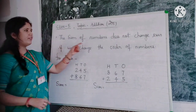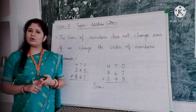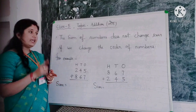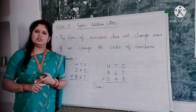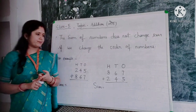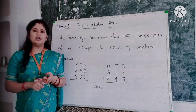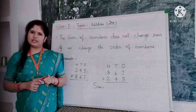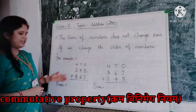The sum of numbers does not change even if we change the order of the numbers. If we change the order of the numbers, the sum will not change. This is an additional property of addition.